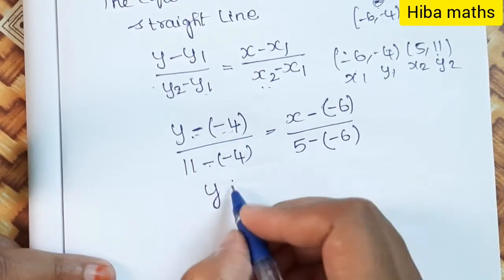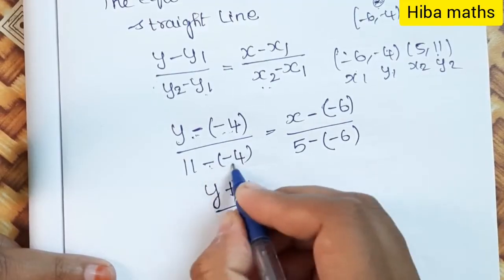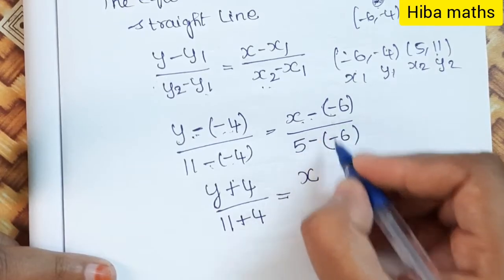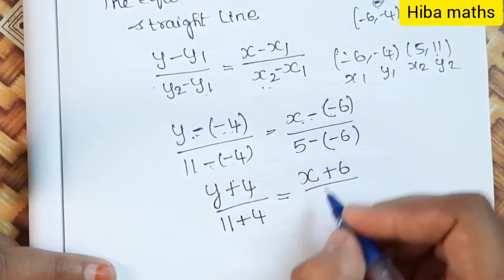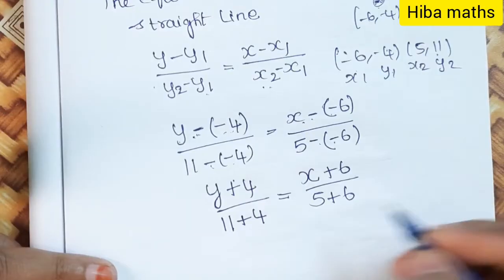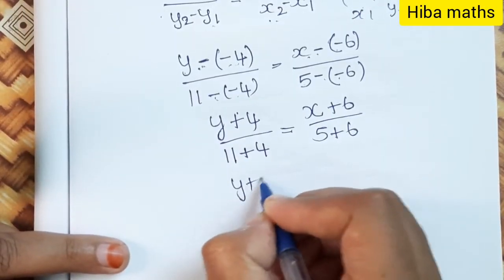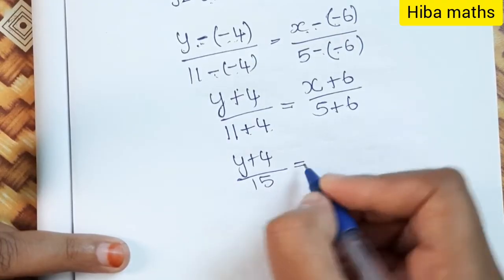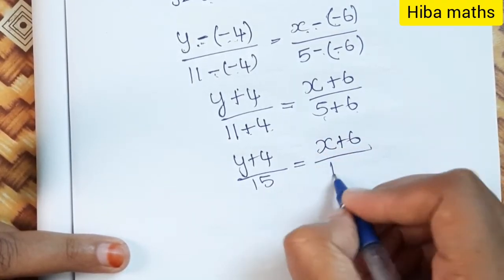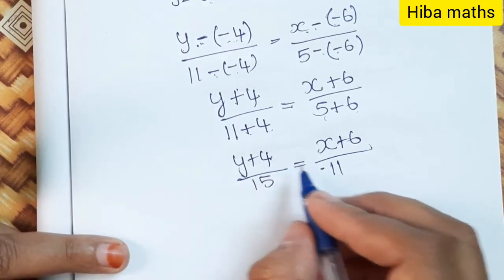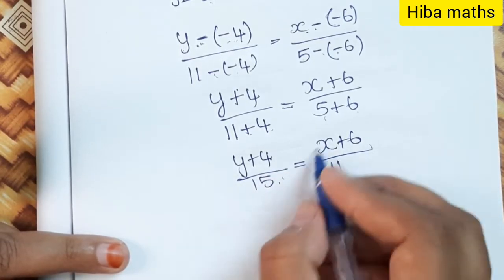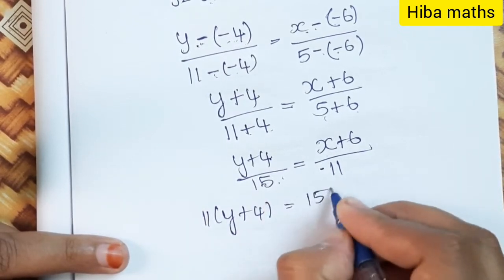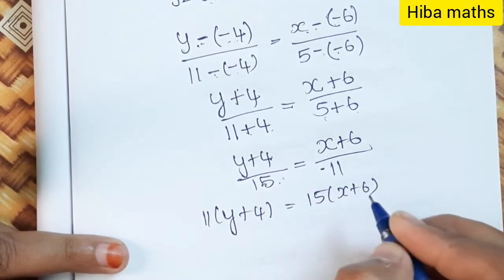So we get: y plus 4 divided by 11 plus 4 equals x plus 6 divided by 5 plus 6. That gives y plus 4 over 15 equals x plus 6 over 11. Cross multiplying: 11 into (y plus 4) equals 15 into (x plus 6).